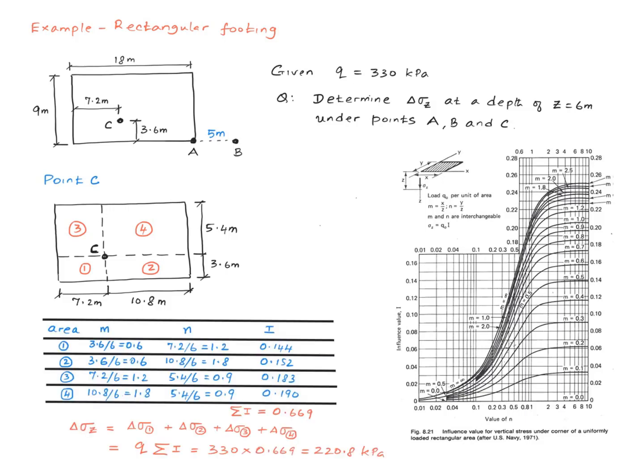Since we have a few rectangles involved, the calculations are better done in a table like this. So for each of these areas, you calculate the m and n and the corresponding i and list them over here. And then you sum up the last column in order to get the sum of the influence values for each of these subrectangles.